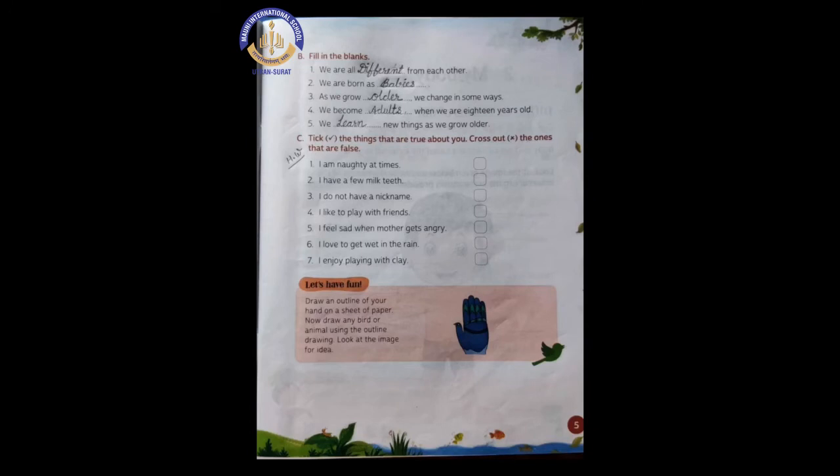Now number 5. We dash new things as we grow older. Okay, we dash new things as we grow older. That means as we grow older, what do we do with new things? We learn them, right? Yes or no? Yes. So the answer is learn. We learn new things as we grow older. And the spelling of learn is L-E-A-R-N.